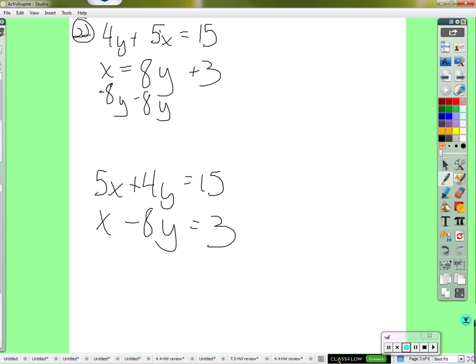So now it can work. Times negative 5. Or you could substitute. We could have used substitution instead. Plug 8y plus 3 into x. We can do that real quick.